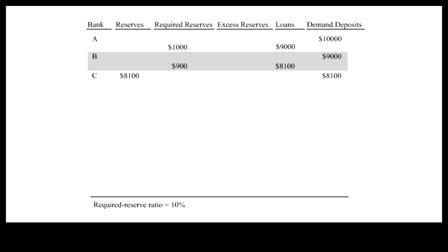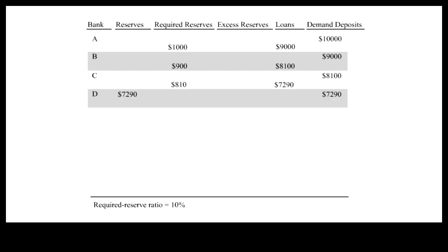Again, only 10% of the reserves need to be kept at Bank C to back up the new demand deposits. The rest could be loaned out to earn interest. Let's assume that the loan will be spent and the recipient deposits the $7,290 into his Bank D account, and so on.